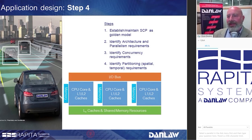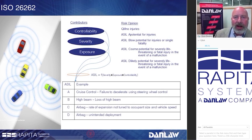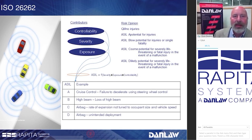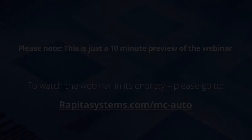In ISO 26262, there are additional requirements on a multi-core system. For those familiar with ASILs — Automotive Safety Integrity Levels — they are used to calculate the risk of a hazard.